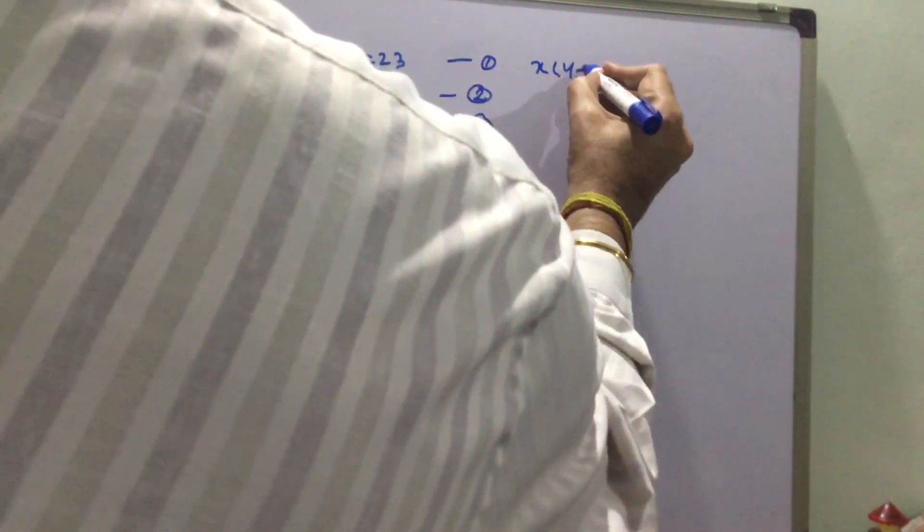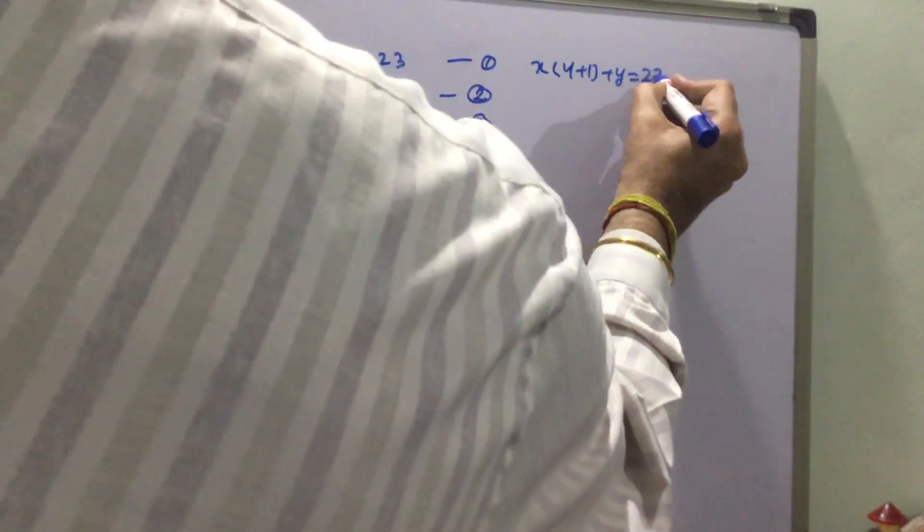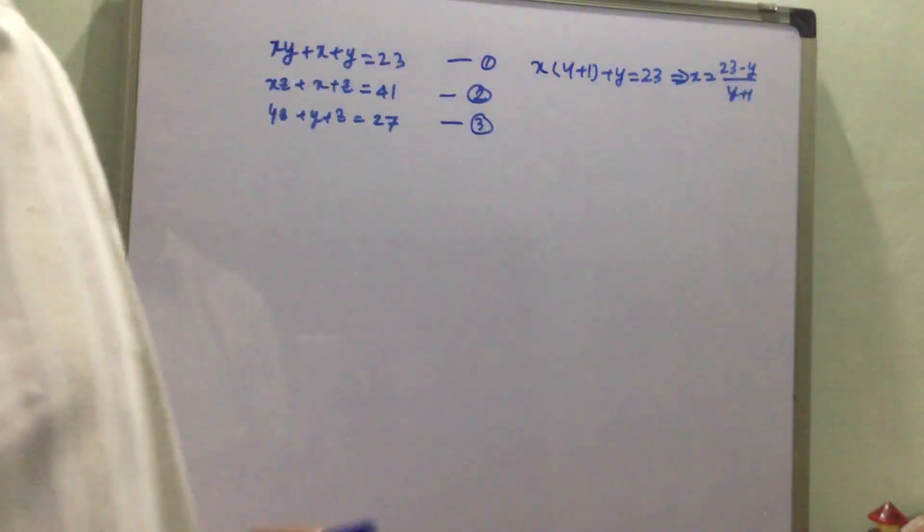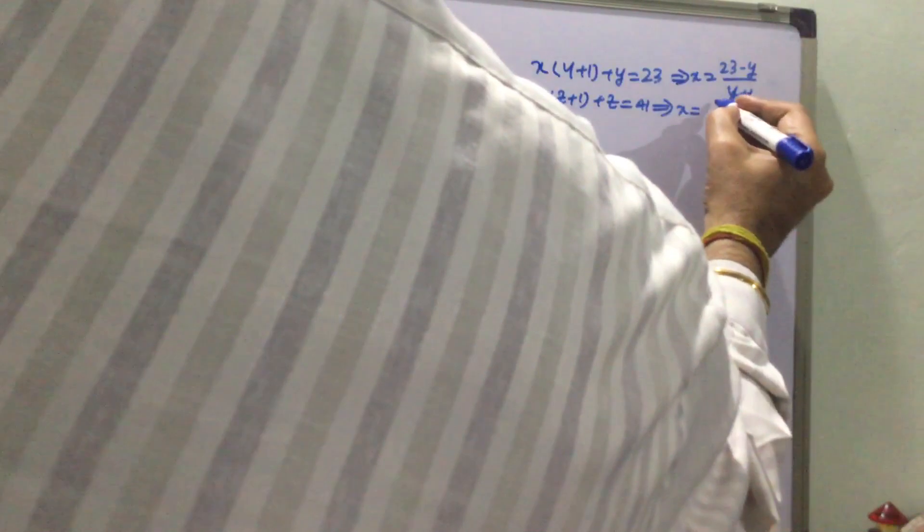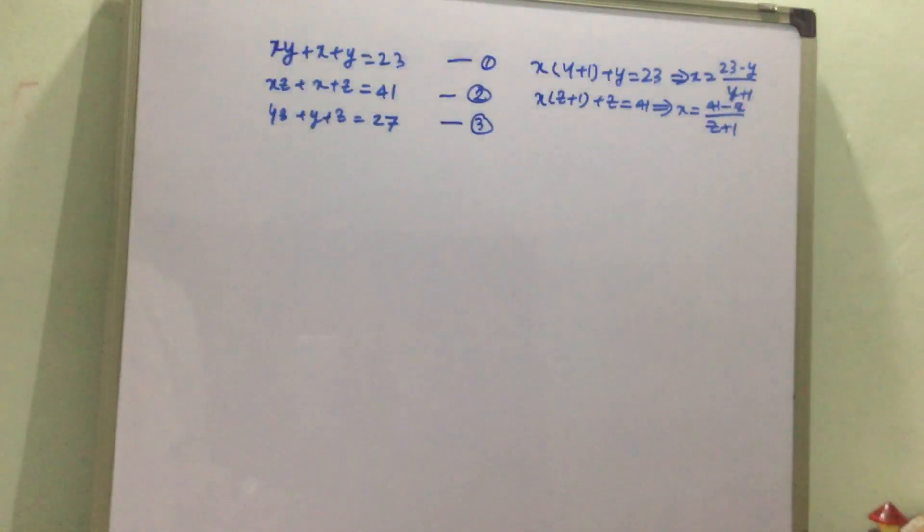We can write the first equation as x(y + 1) + y = 23, which gives x = (23 - y) / (y + 1). Similarly, the second equation x(z + 1) + z = 41 gives x = (41 - z) / (z + 1).